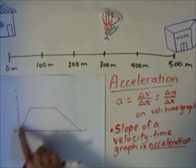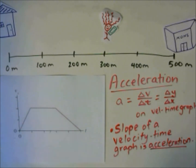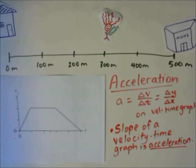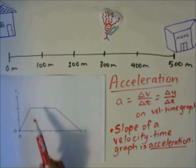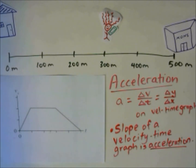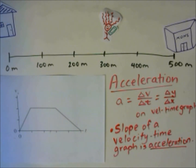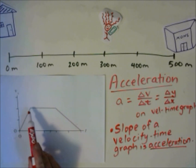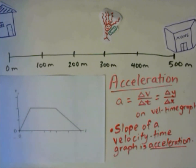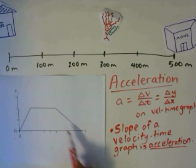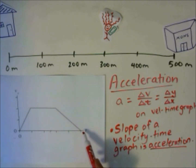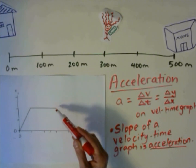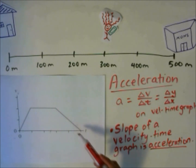Here we have a positive slope, which means there is a positive acceleration — the object is speeding up. You can tell because the velocity is going from zero and increasing. When the slope is zero, the acceleration is zero, so the velocity is constant and there is no acceleration. For the last section of motion, the slope is negative, meaning there is a negative acceleration — the object is decelerating or slowing down, with velocity going from its value down to zero.